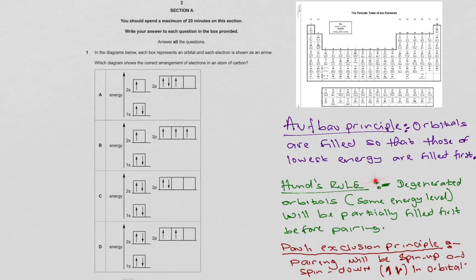Hund's rule states that for any degenerate energy level—this is a degenerate energy level because they have the same energy, so we call it degenerate—before we pair up the orbitals, we have to partially fill in the orbitals first. The total is the number of orbitals. In this case, there are three orbitals. We have to start with one electron, one electron, one electron, before we start pairing electrons.